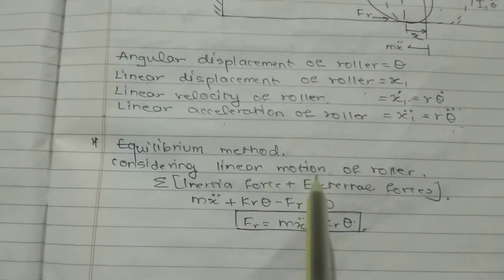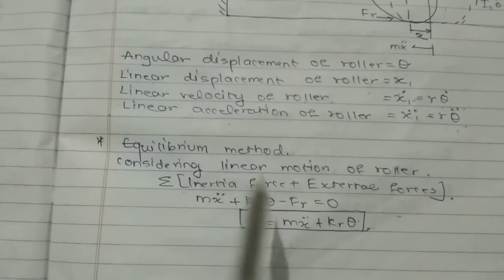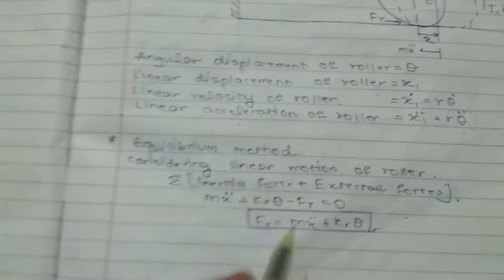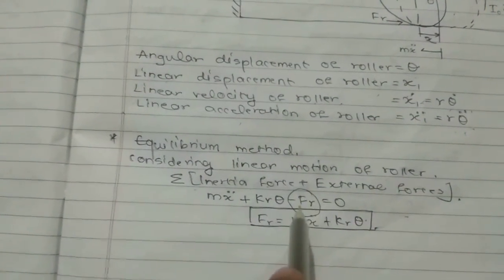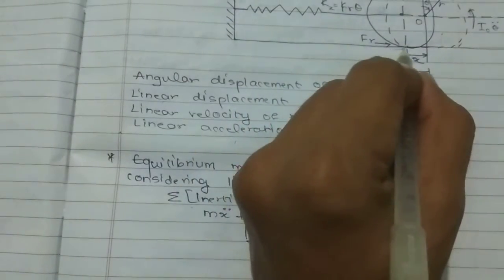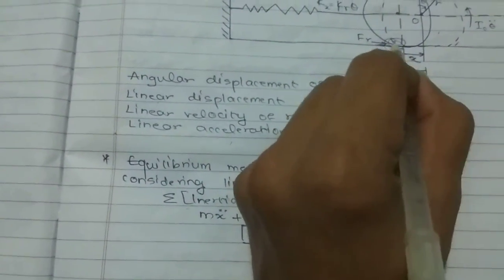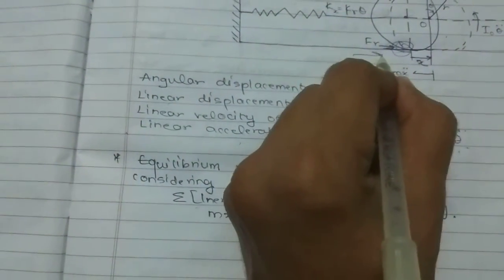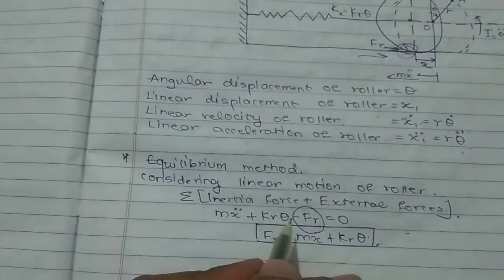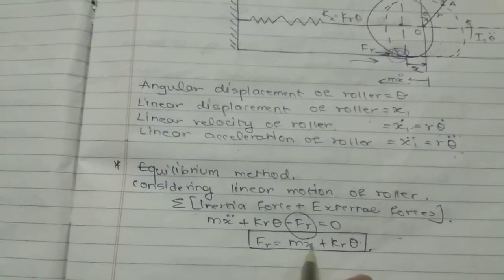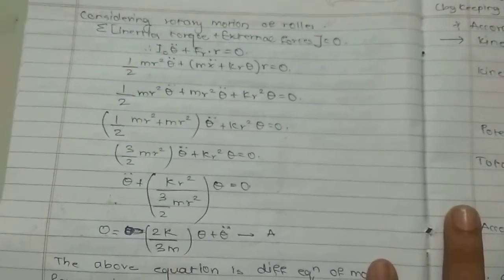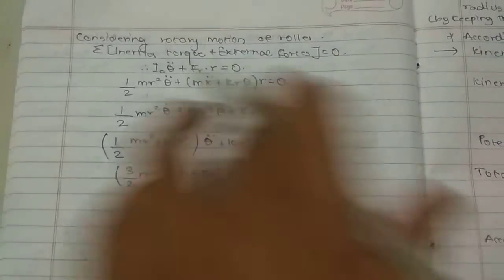Considering linear motion of the roller, summation of inertia force plus external force: m*x-double-dot plus k*r*theta minus f_r equals zero. Here f_r is the frictional force the roller has with the horizontal surface. It is an external force and its direction is opposite to m*x-double-dot, so we take the sign negative. Therefore f_r equals m*x-double-dot plus k*r*theta.